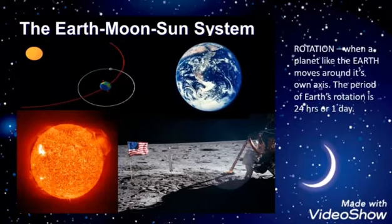The moon moves around the earth while the earth moves around its own axis. This movement is called rotation. Rotation is when a planet like the earth moves around its own axis. The period of earth's rotation is 24 hours or one day.